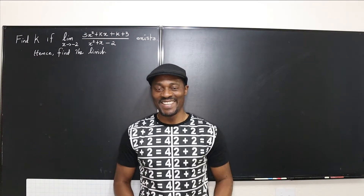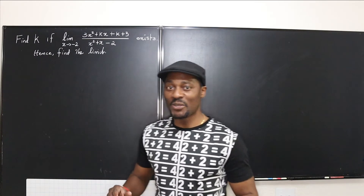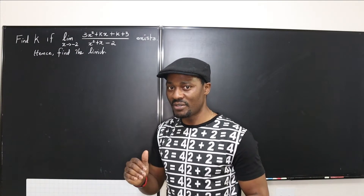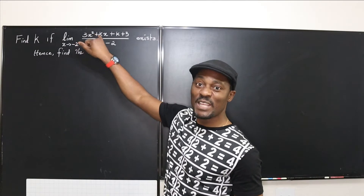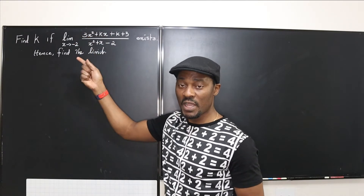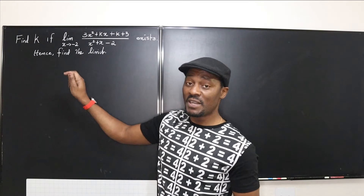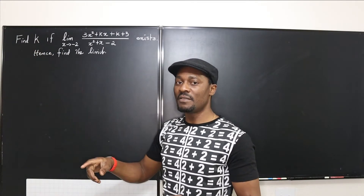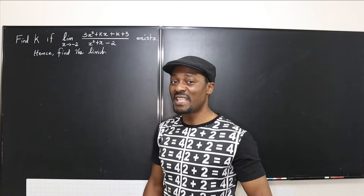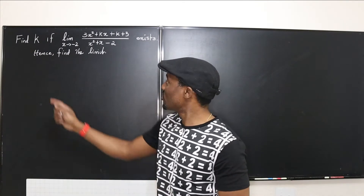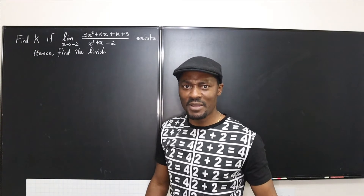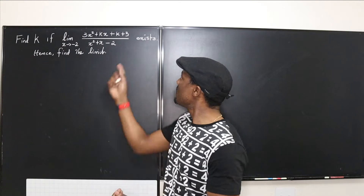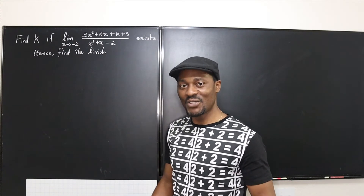Hello and welcome to another video. In this video I'm going to show you how to tackle a limit problem where you're given a rational expression with an unknown in the numerator and you're asked to find that unknown if the limit exists, and then find the limit. The second part is straightforward once you have k, but the problem is how do we find k and how do we know the limit exists? Let's get into it.